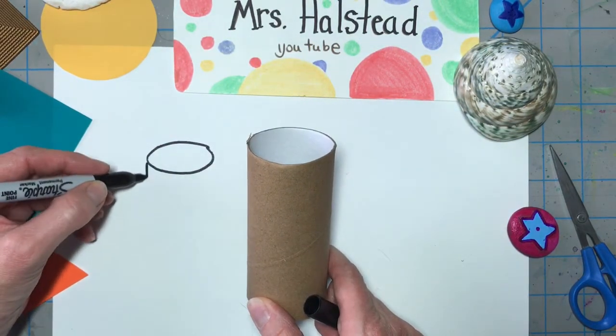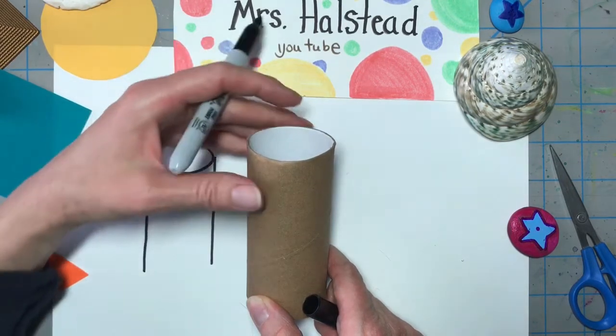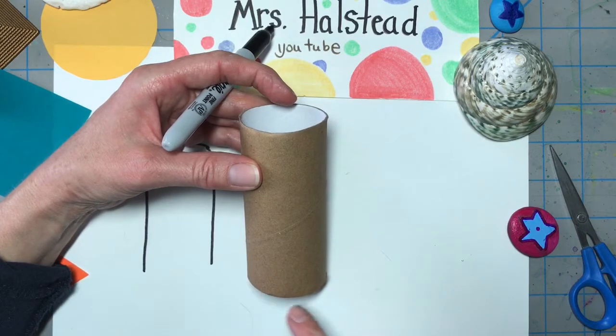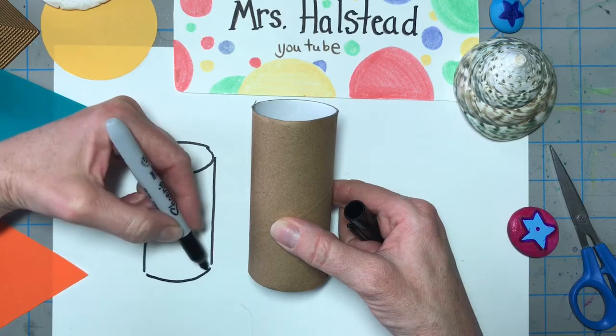Next, we'll draw the sides. Those are two vertical lines. When you look at the bottom, notice it's curved. So we draw the bottom as a curved line.